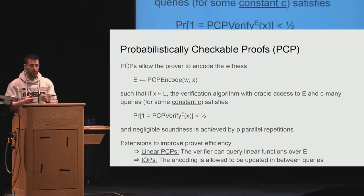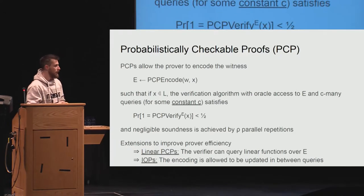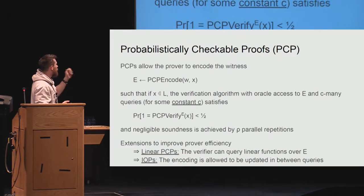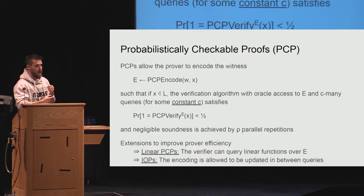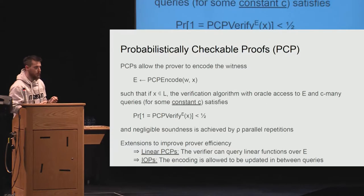In order to introduce the construction, I need to give a one-slide explanation of probabilistically checkable proofs. This is a beautiful information-theoretic object and a monumental work in complexity theory, proved useful in cryptography primarily for these applications. A probabilistically checkable proof allows one to encode a certain witness and statement such that if the verifier has oracle access to such an encoding, it can verify the membership of the witness in the language by querying the oracle only a constant number of times. Negligible soundness is achieved by parallel repetitions.